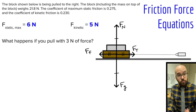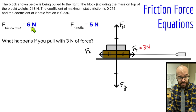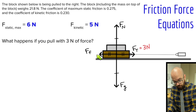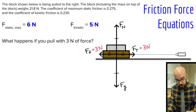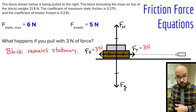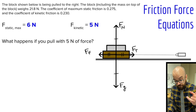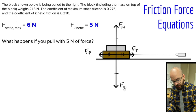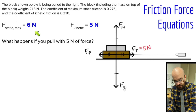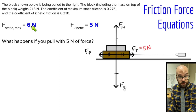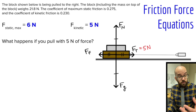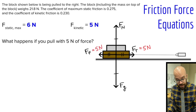What happens if we pull with 3 newtons of force? Well, 3 newtons is less than our maximum static friction of 6 newtons, so the block's not going to be moving. Our friction force would balance that out exactly — we'd have 3 newtons of friction and the block would remain stationary. What if we pulled with 5 newtons? Again, 5 newtons is still less than the 6 newton maximum static friction, so I haven't reached the maximum. Our static friction balances out the pull exactly at 5 newtons, and the block is still stationary.